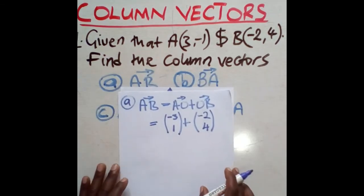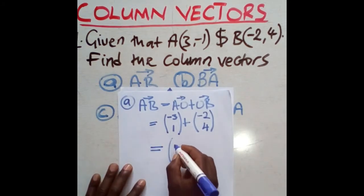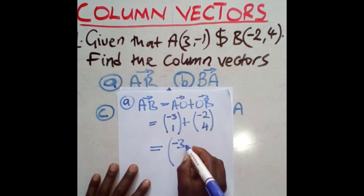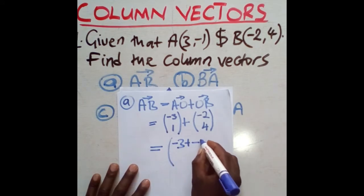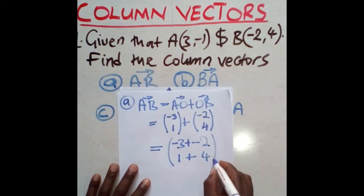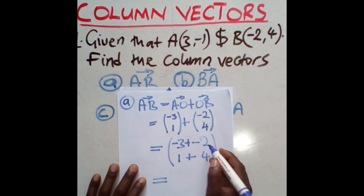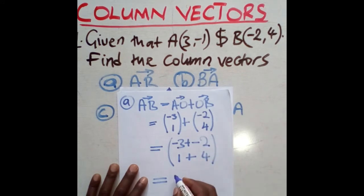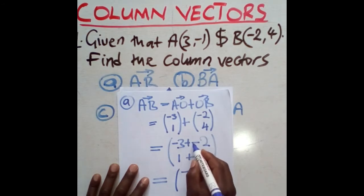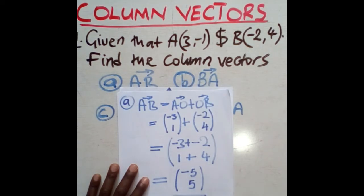This is now simply addition of column matrices: (-3) + (-2) on top, and 1 + 4 on the bottom. Negative three plus negative two gives negative five, and one plus four gives five. Therefore AB = (-5, 5).